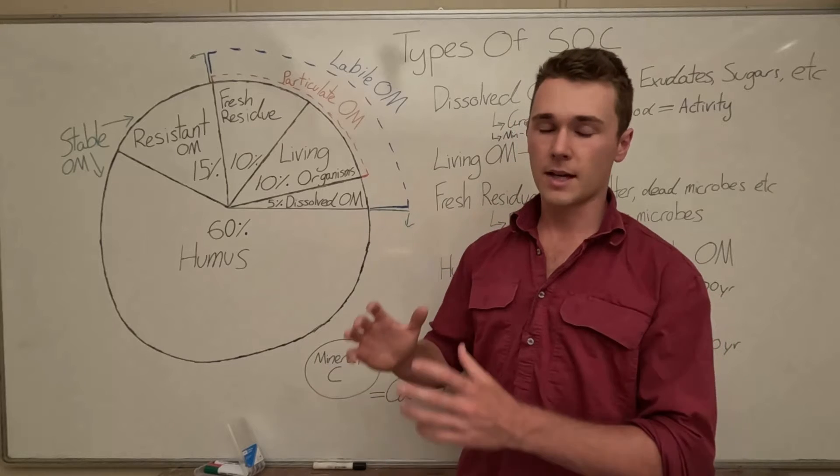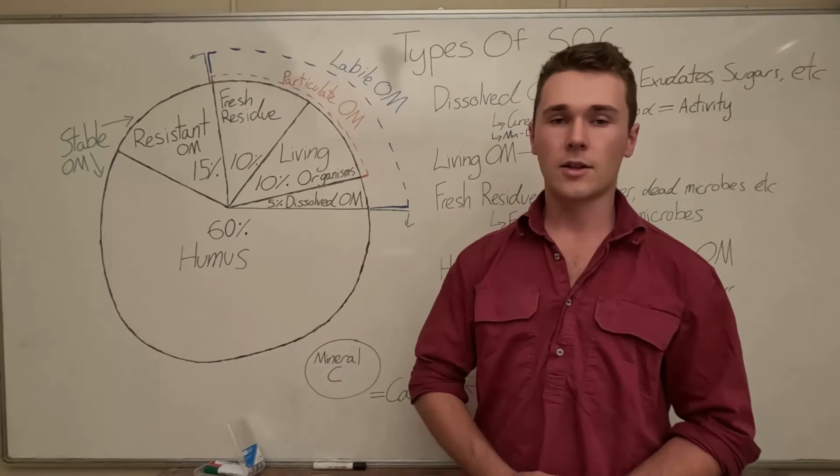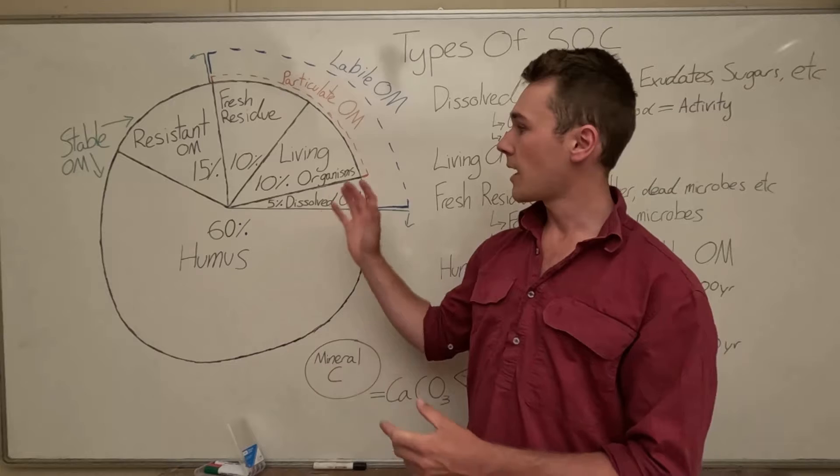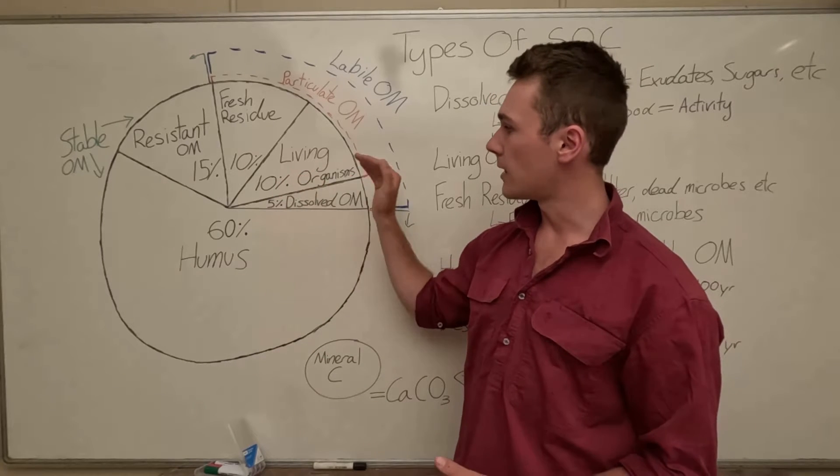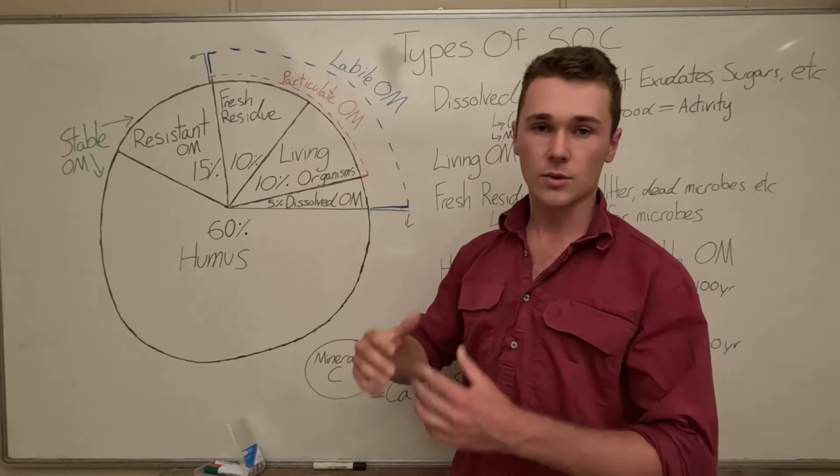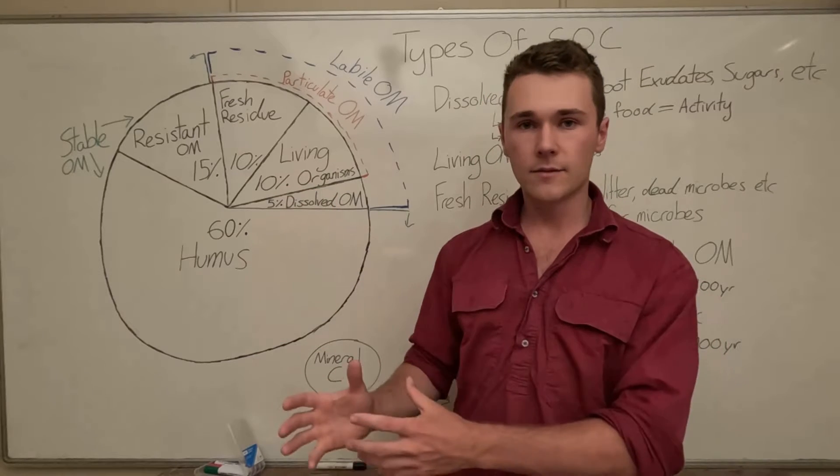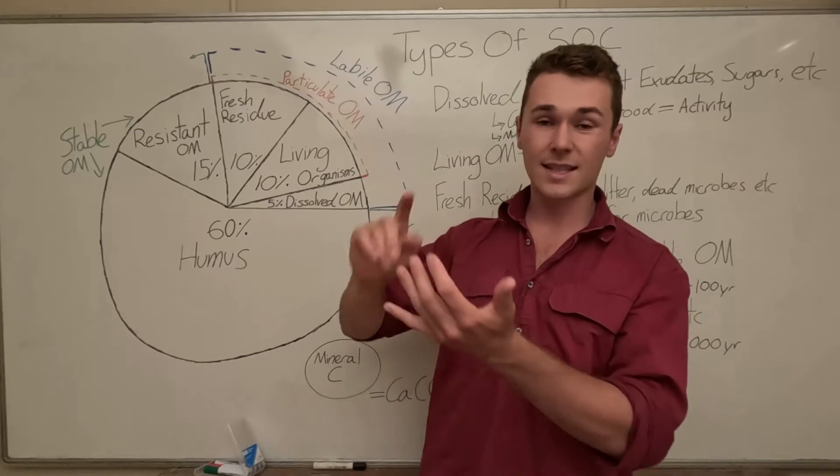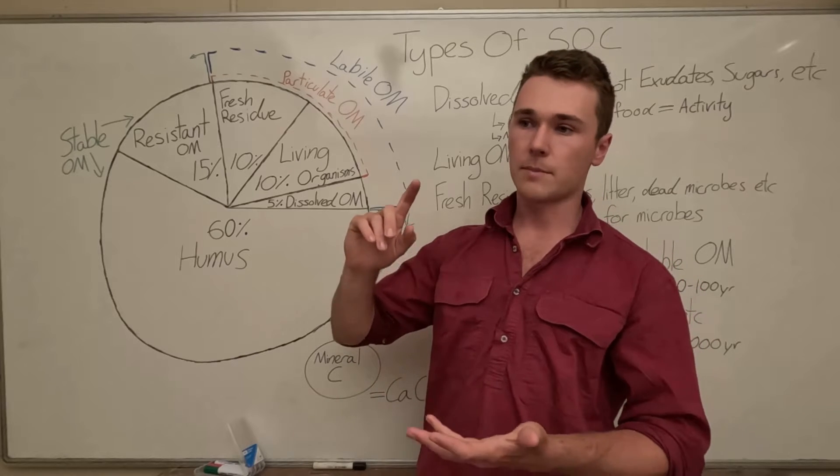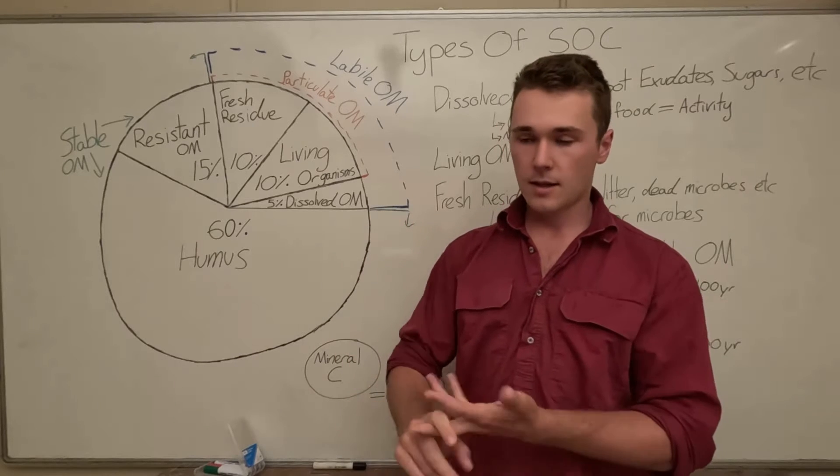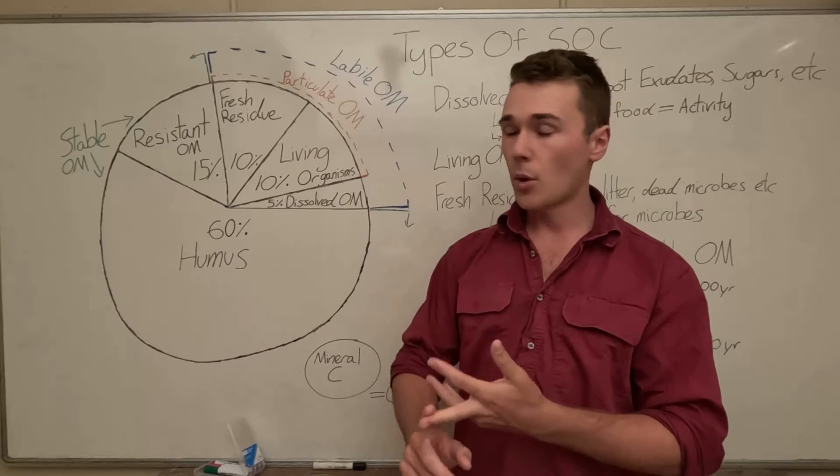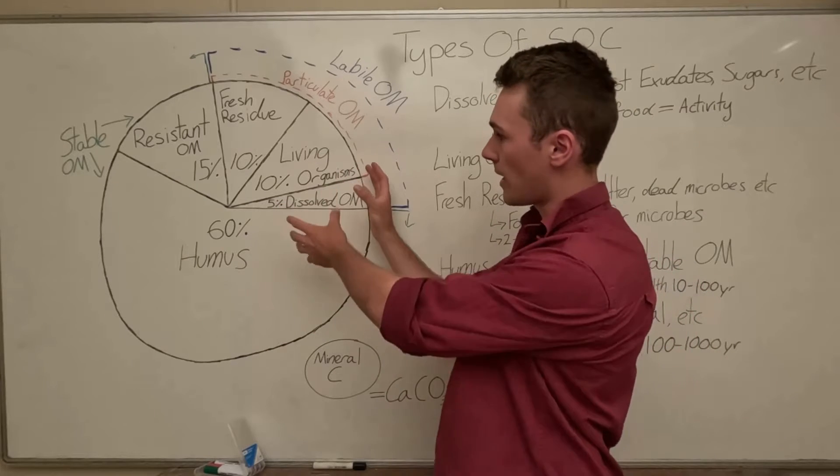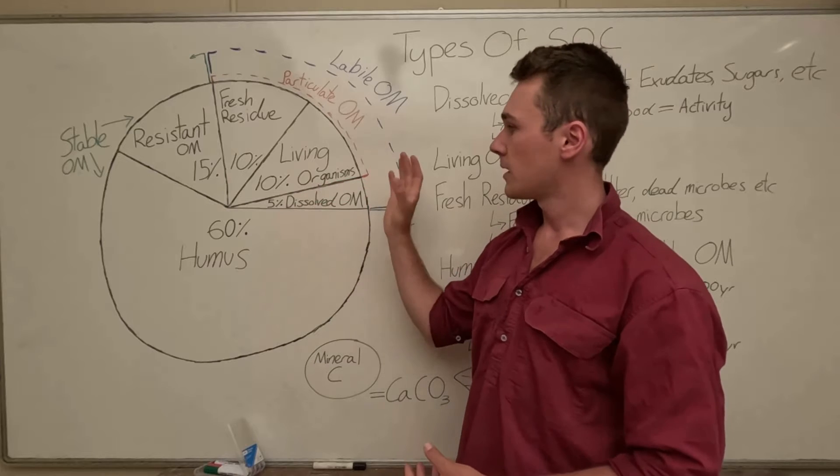So if you don't know too much about soil microbes I've got some other videos on that you can go check out. But effectively they bring a lot of activity to our soil. So the bigger the pool is of our living organisms or microbes the more active our soil is going to be. So that's going to be things like decomposition or supplying nutrients to our plants, things like mycorrhizae or fungi that's really important and so the bigger our biomass of living organisms is better for our soil.